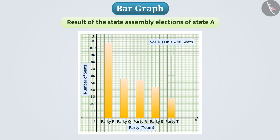Simultaneously the scale is also shown here which tells us that one unit on the y-axis means 10 seats. Here vertical lines of uniform width are drawn at equal distances. These are called bars. All the bars in the bar graph are of equal width and have the same distance.